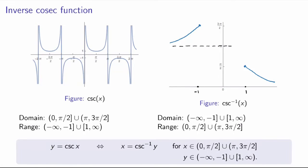Finally, the inverse cosecant function. That's another one with no universally accepted convention for the principal branch, so we'll stick with the textbook choice, which is to go from 0 to pi over 2 and then skip to pi to 3 pi over 2. That doesn't seem very natural, but it is a natural choice from the point of view of derivatives of inverse trig functions. The range is just like for the secant function, and the inverse cosecant function looks similar — vertical asymptotes become horizontal asymptotes, and domains and ranges are exchanged.